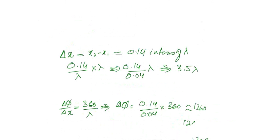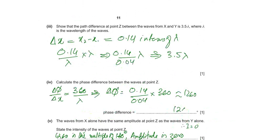0.14 in terms of lambda is 0.14 divided by lambda, multiplied by lambda, which is 0.14 divided by 0.04. This will be 3.5 of lambda. 3.5 means it is a destructive interference.